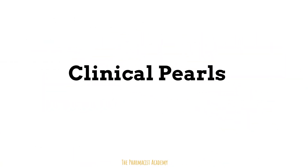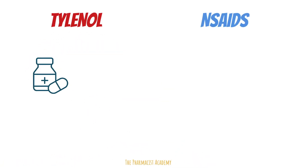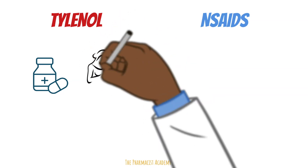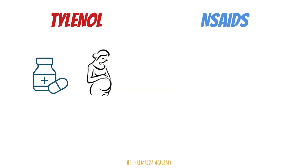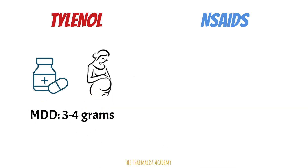For clinical pearls: Tylenol is found in multiple over-the-counter cough and cold brands, so overdoses do happen — sometimes because the patient did not know they were taking the same drug. The pharmacist must educate patients on this, and patients should always look at the ingredients on the medication label for acetaminophen. Tylenol is also usually the preferred pain reliever and fever reducer for pregnant women. The maximum daily dose ranges from 3 to 4 grams.